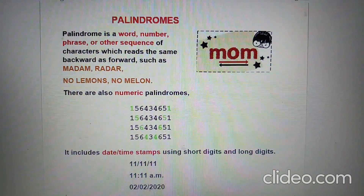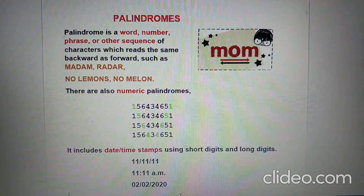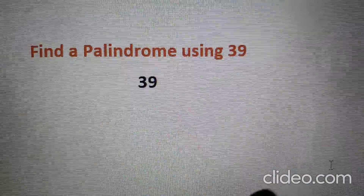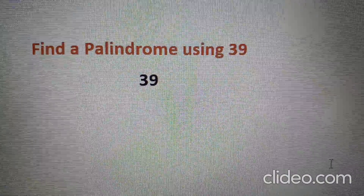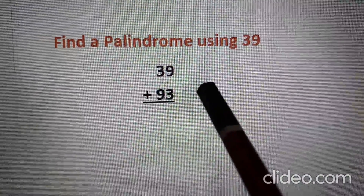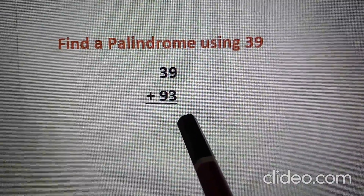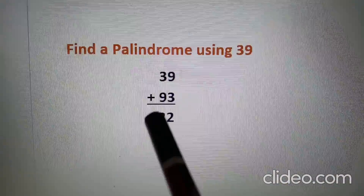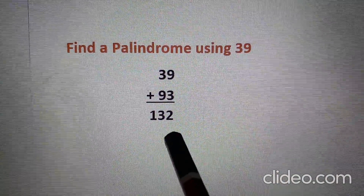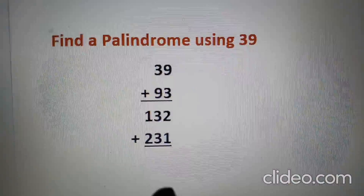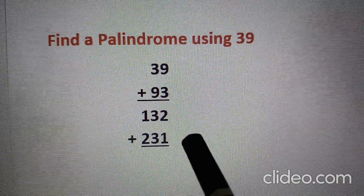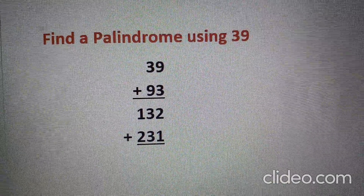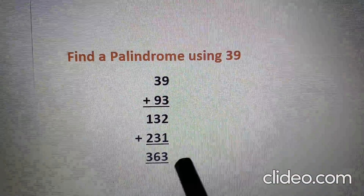Interesting, isn't it? We can also create a palindrome using numbers. Let us find a palindrome using the number 39. Write down 39 first of all. Now we will reverse the digits — 39 becomes 93. Then we add: 39 plus 93 gives us 132. Again, we reverse 132, which gives 231. Then we add 132 and 231, and we get 363.